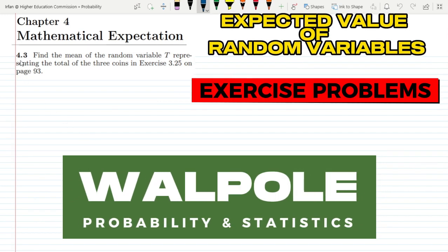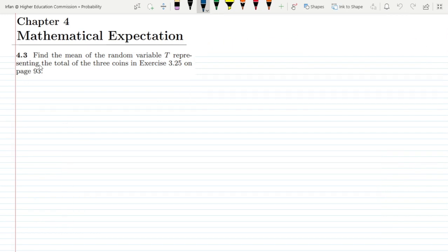Welcome back guys. Let us solve question 4.3 today. The statement is: find the mean of the random variable T representing the total of three coins in exercise 3.25 on page 93.